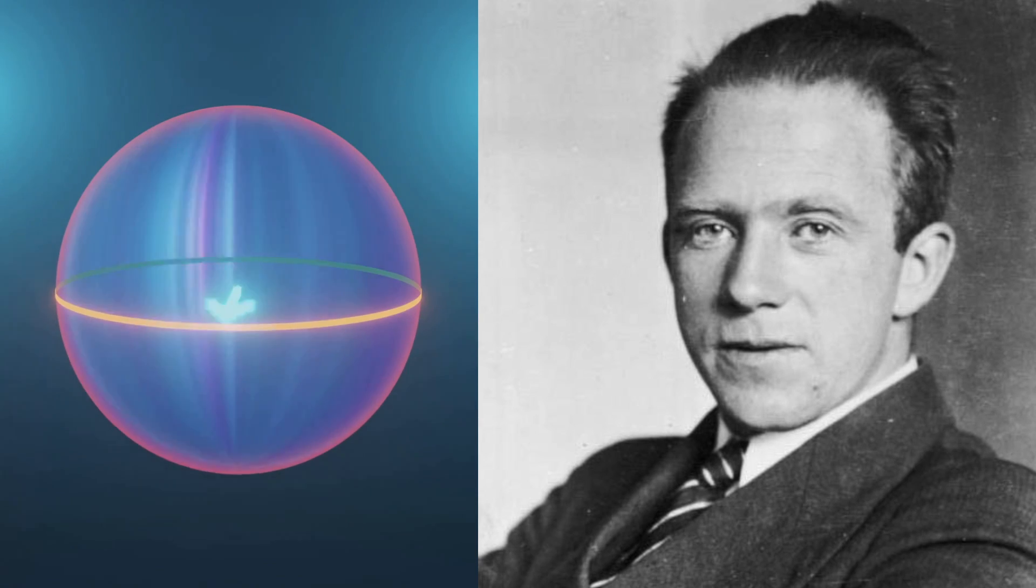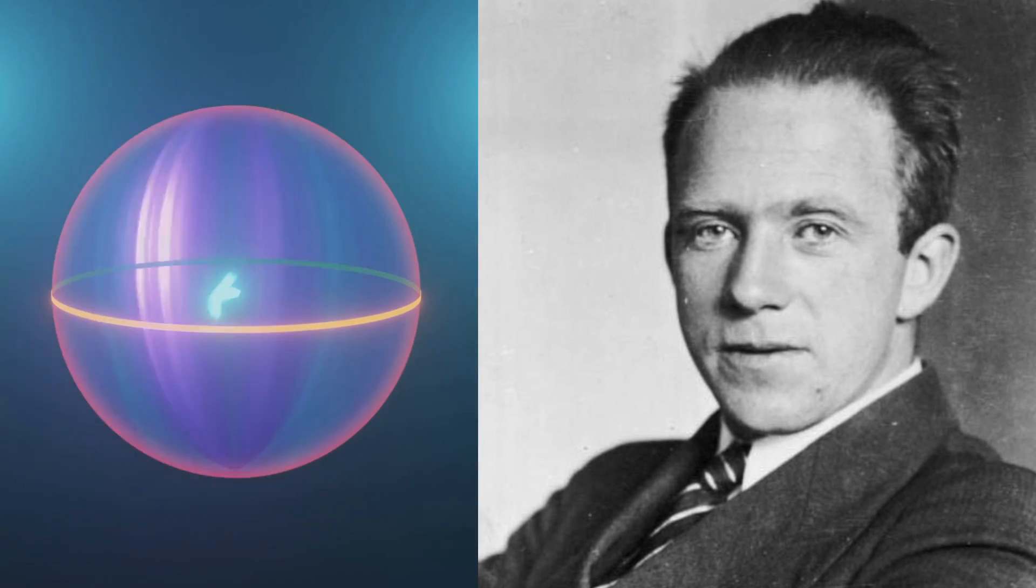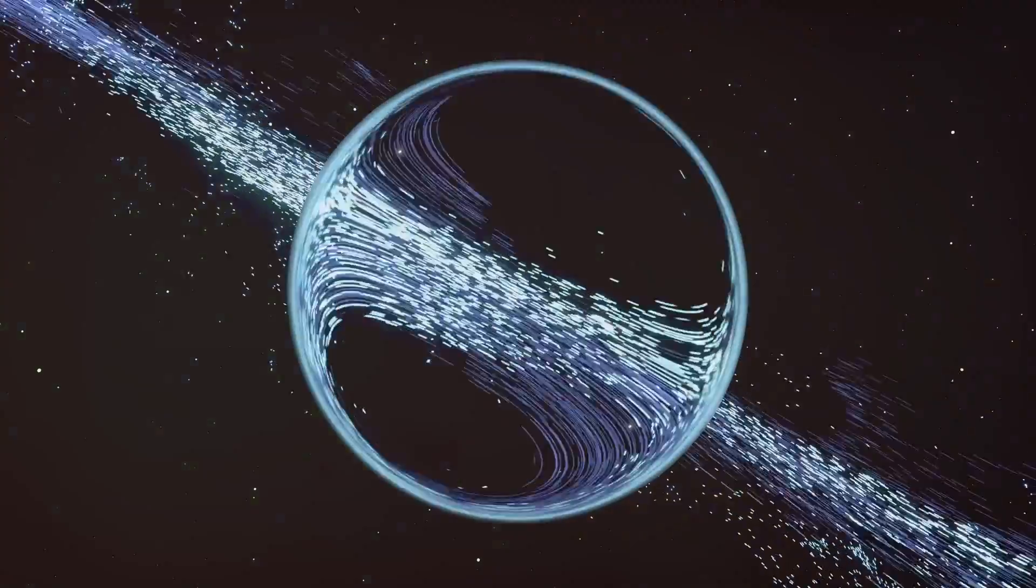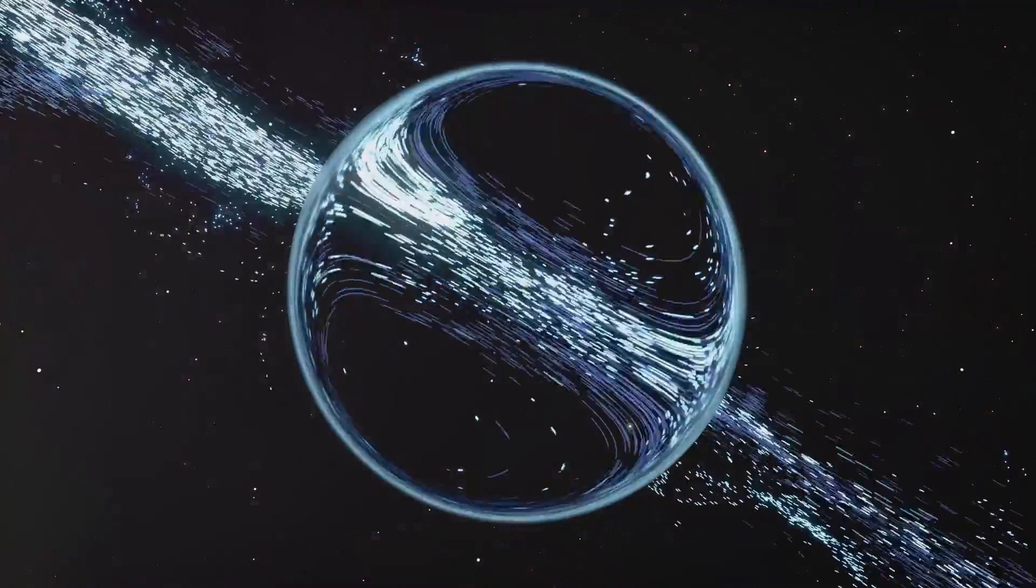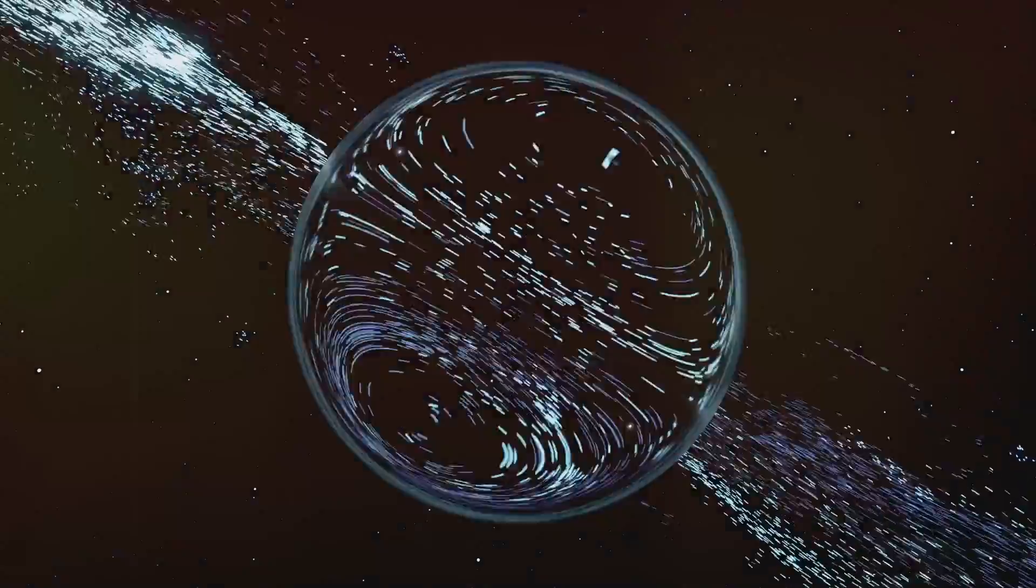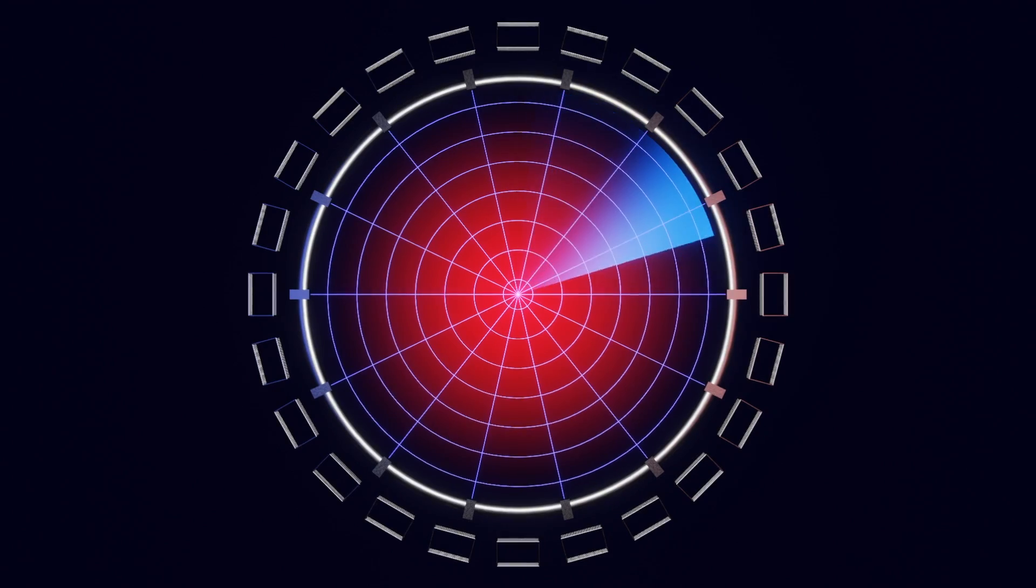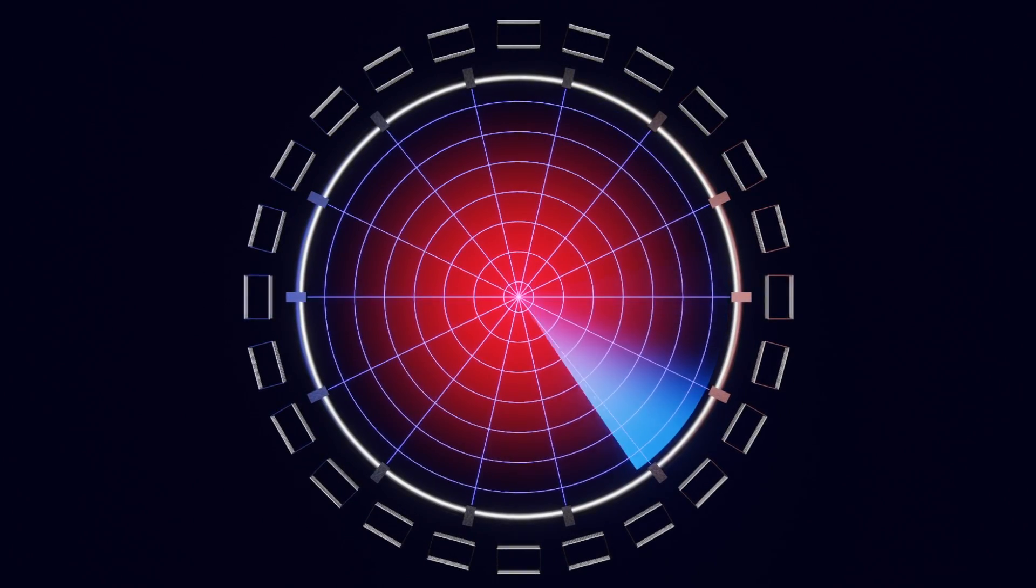As we just noted, a related concept here is the Heisenberg uncertainty principle, asserting that it's impossible to simultaneously know both the exact position and momentum of a particle with complete precision. The more accurately we measure one of these properties, the less accurately we can know the other. This inherent uncertainty is a foundational quality of quantum mechanics.